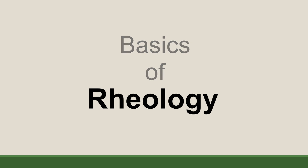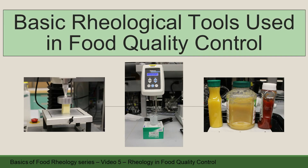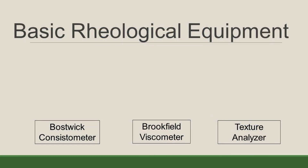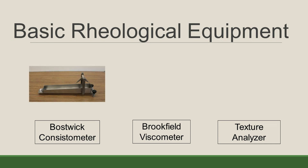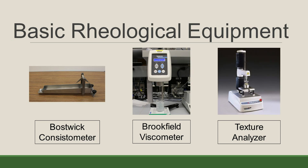Welcome to the basics of rheology with a focus on food rheology. This video will cover basic rheological tools used in food quality control. When I say rheology, you might be thinking of a big expensive rheometer to poke and play with your food. But not everyone has an extensive budget or the need for a rheometer. Today we'll be covering some basic rheological equipment that can be simple to a little more complex. We will start with the Boswick consistometer, then the Brookfield viscometer, and lastly we will introduce the texture analyzer.